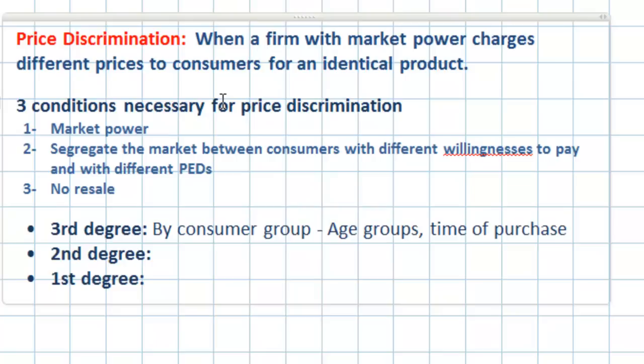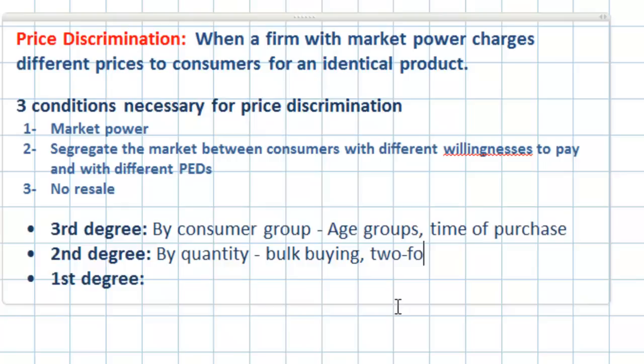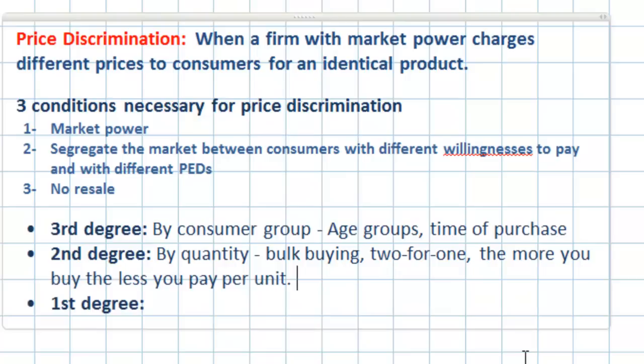Second-degree price discrimination occurs when firms discriminate based on quantity. Bulk buying is a form of price discrimination in which buyers who order large quantities pay lower prices than buyers who order smaller quantities. Another example is 2-for-1 deals, where you buy two and get one free. Generally, the more you buy, the less you pay per unit — any example where consumers pay a lower price because they bought more is second-degree price discrimination.